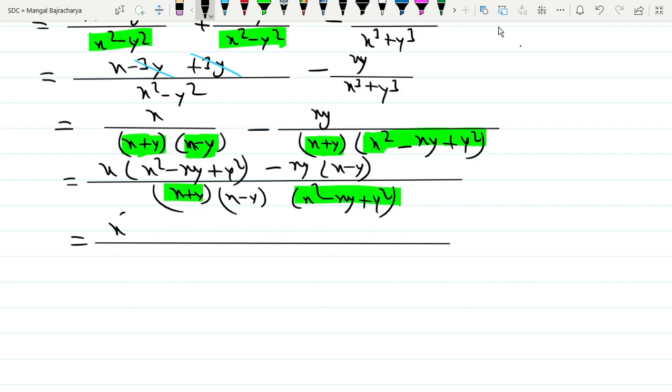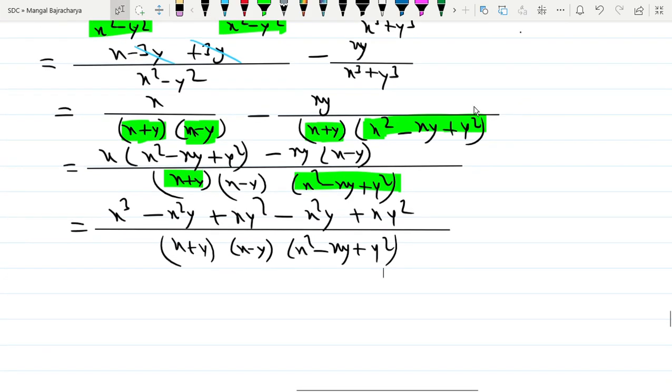Bracket open. x into x² is x³, x into y is x²y, plus x into y² is xy². xy into x is x²y. Minus y into y². So x³ minus 2x²y and plus 2xy².